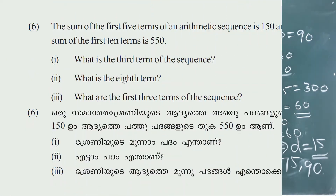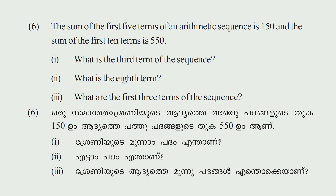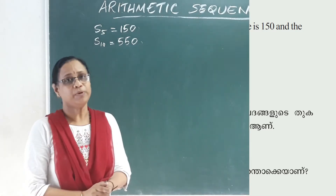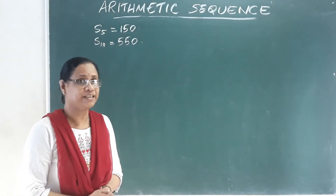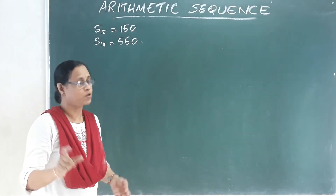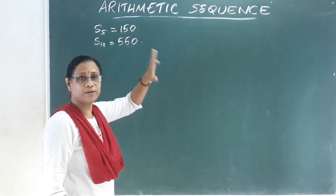Now let's go to the next problem. The sum of the first five terms of an arithmetic sequence is 150, and the sum of the first ten terms is 550. First question: what is the third term of the sequence? What is the eighth term? What are the first three terms?